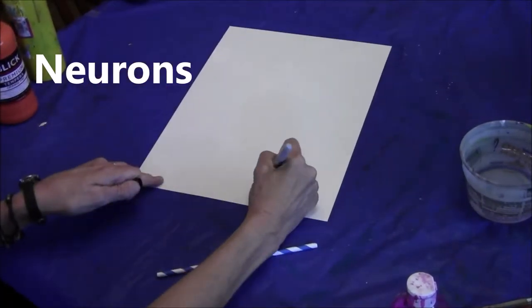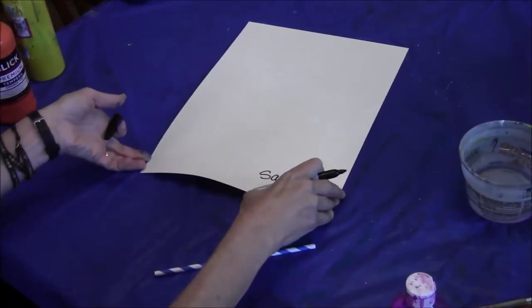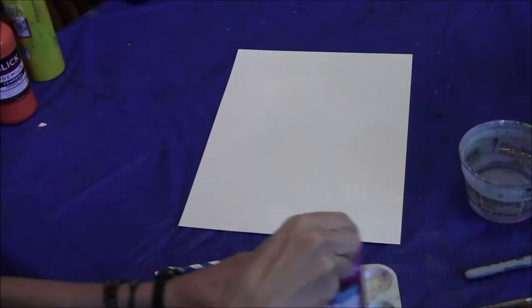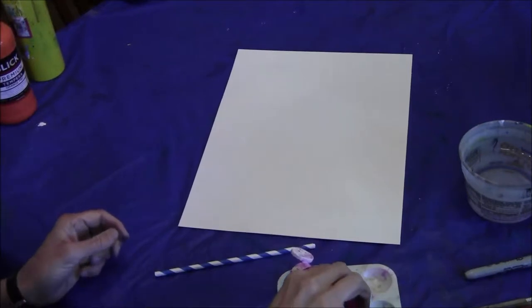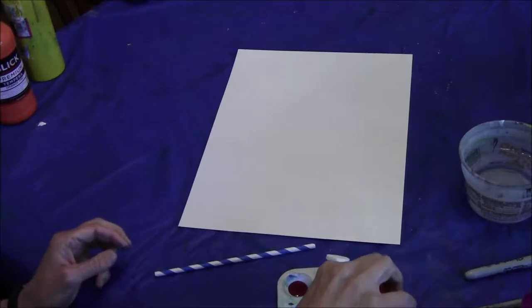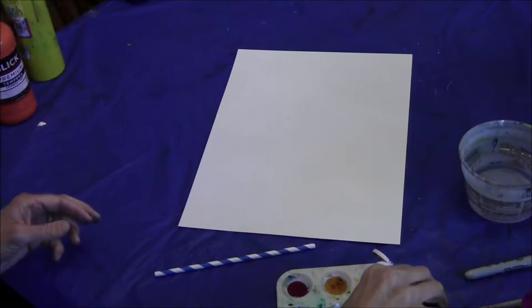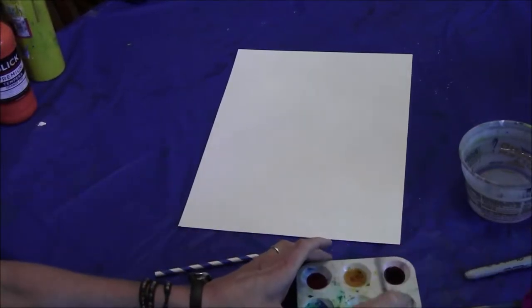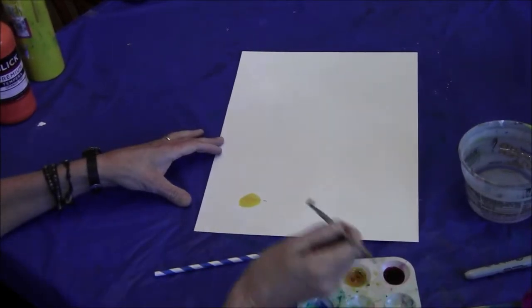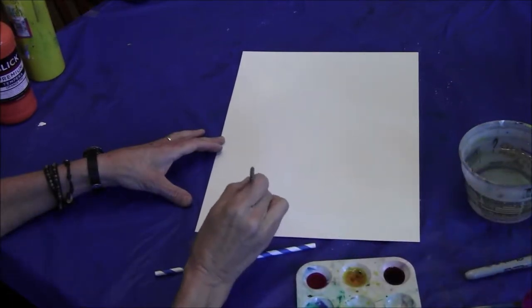First flip your paper over and put your name on the back, and then pick your colors that you want to use. Okay, liquid watercolor here. Take your paintbrush and make a pretty wet circle. You can add some water to it.